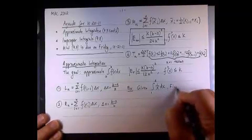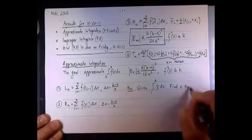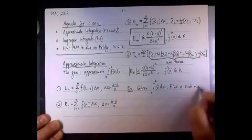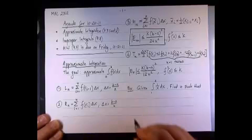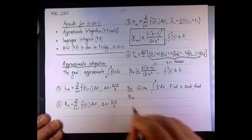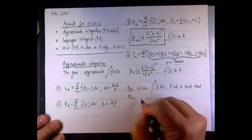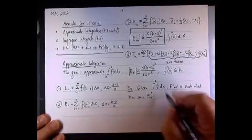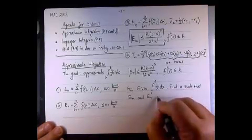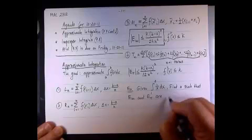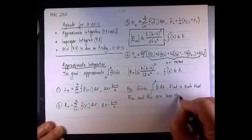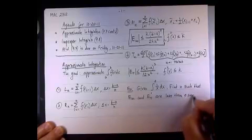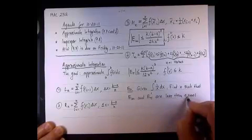In this case, we want to find n such that E sub m, the error as we calculate the midpoint, and E sub t, the error as we calculate the trapezoidal with the trapezoidal rule, are less than 0.0001.